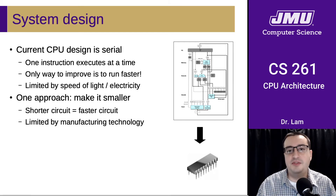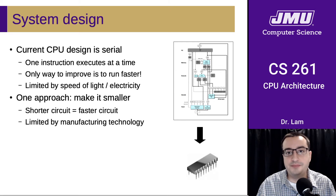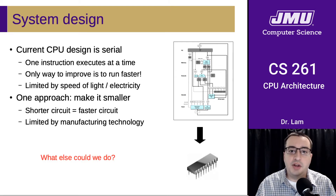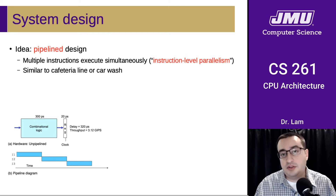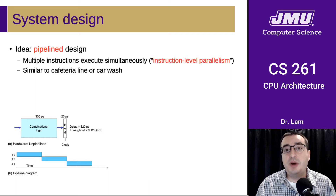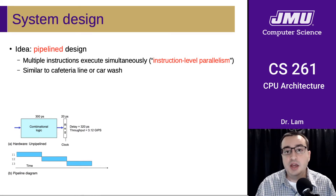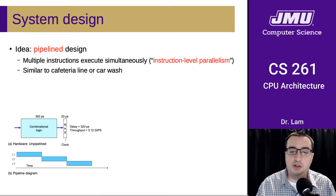It's worth pausing the video at this point and thinking about how you might approach this problem — what other ideas you might have for making the CPU faster. The ubiquitous solution here, the approach that all modern CPU designers are taking, is something called pipelined design. The idea is that multiple instructions are going to be executing simultaneously on the CPU — the CPU is no longer going to execute one instruction at a time. This is referred to as instruction-level parallelism.